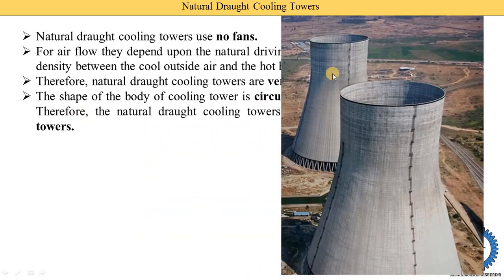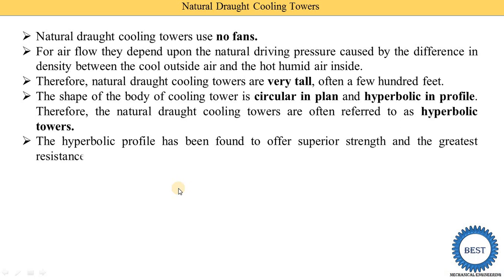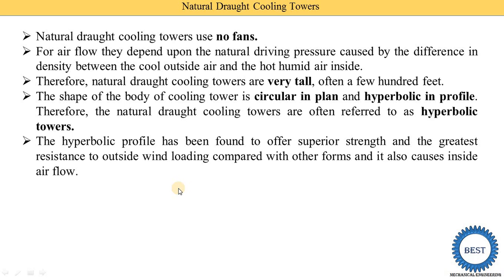Here you can see the diagram of a natural draft cooling tower. When viewed from the top it looks like a circular shape, and when viewed from the sides the profile is hyperbolic — this curve is called the hyperbolic curve. The hyperbolic profile has been found to offer superior strength and the greatest resistance to outside wind loading compared with other forms.